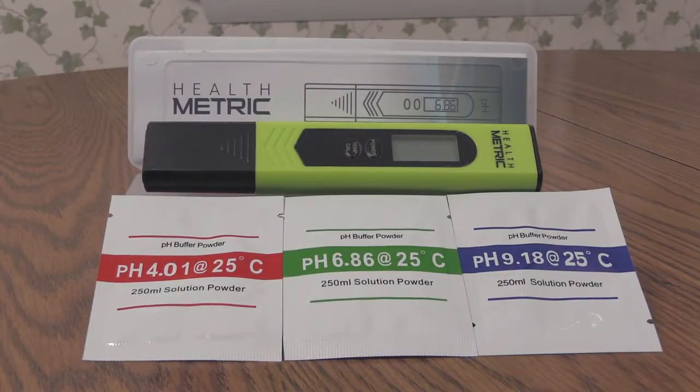How to calibrate your Healthmetric pH meter. The Healthmetric pH meter comes with an instruction booklet, pH meter, and packets of pH buffer powder.